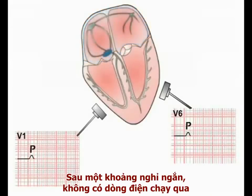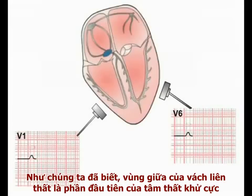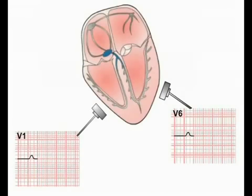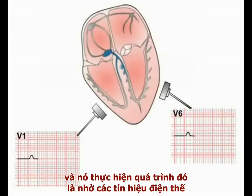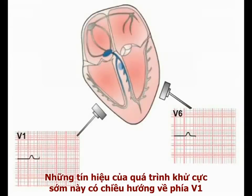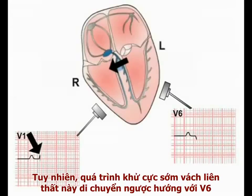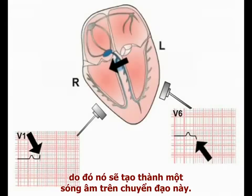This is the P wave of atrial depolarisation. After a short delay in which no current is flowing, the AV node allows the depolarisation signal to travel into the ventricles. The mid-zone of the interventricular septum is the first piece of ventricular muscle to depolarise, and it does so by signals spreading across the septum from the left towards the right bundle branch. This early depolarisation signal is moving towards V1, and therefore produces a positive deflection on the ECG paper in the recording from this lead. However, this septal current is moving away from lead V6, producing an initial negative deflection in this lead.